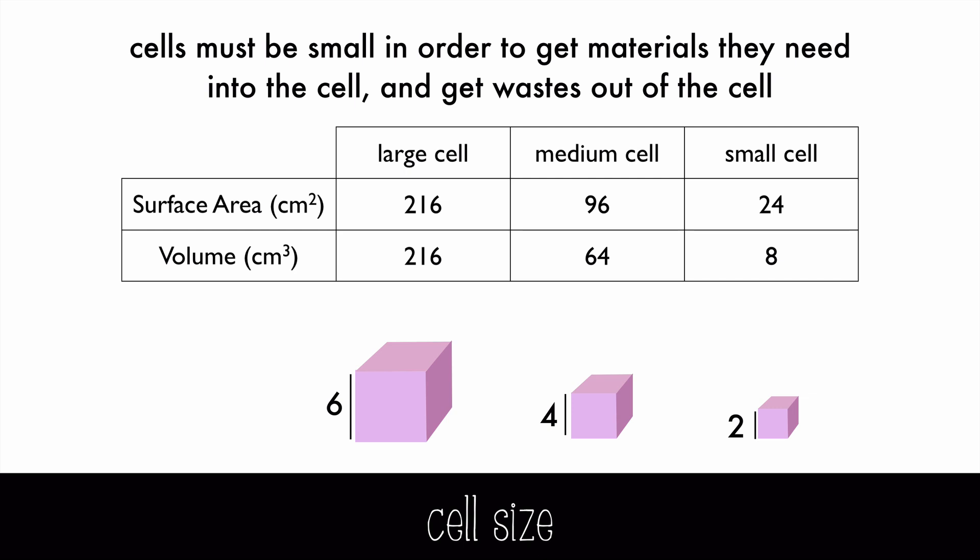The medium has an edge of 4 centimeters, which makes the surface area 96 and the volume 64. And the small cell has an edge of 2 centimeters, which makes the surface area 24 square centimeters and the volume only 8 cubic centimeters.